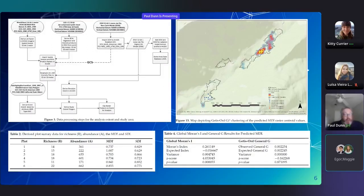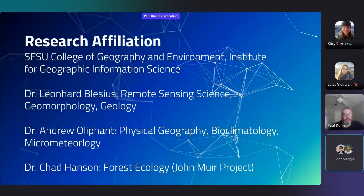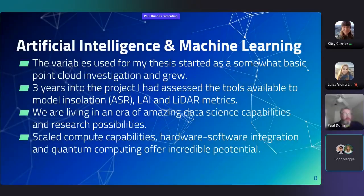The graph in the upper left shows how we brought the actual data together for the model. In addition to a multiple linear regression model, we performed spatial statistics and clustering statistics on the findings. My research affiliation for this work was at SF State, with Dr. Leonard Blessius, Dr. Andrew Olifant, and Chad Hansen from the John Muir Project contributing to the forest ecology component.